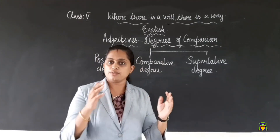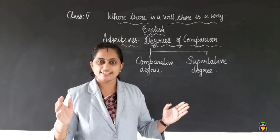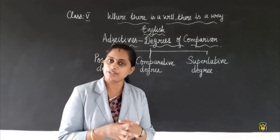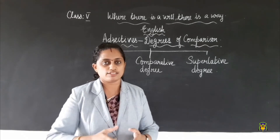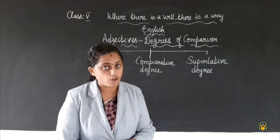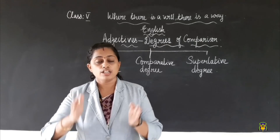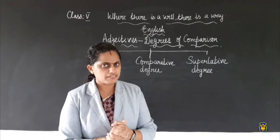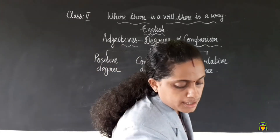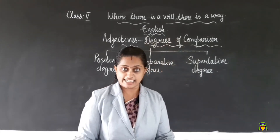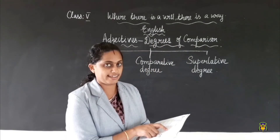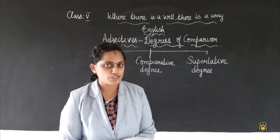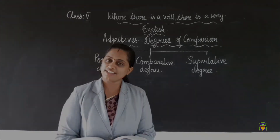In today's class, we saw the three degrees of comparison: positive degree, comparative degree, and superlative degree. We also saw the different ways to form the comparative and superlative degrees. For homework, please complete the 'Let's Try' exercise on page 38 of your grammar textbook. We will do the textual exercises in the next class. Thank you and have a nice day.